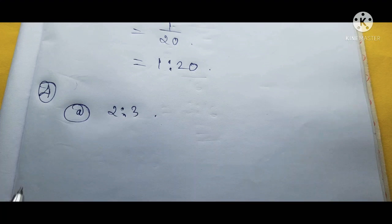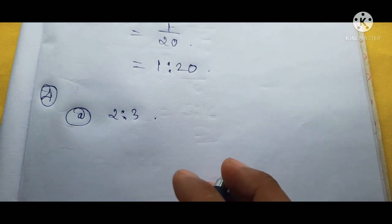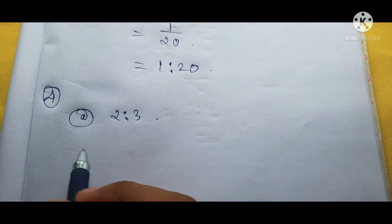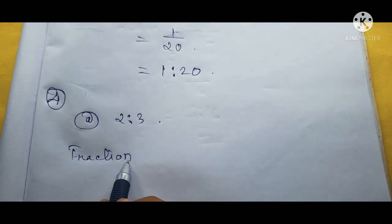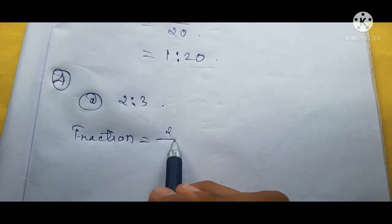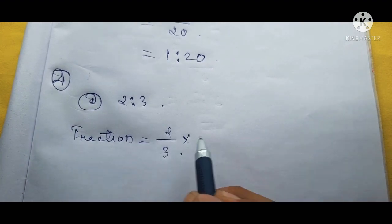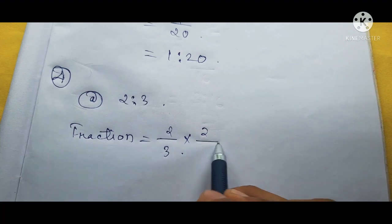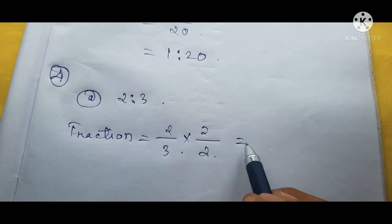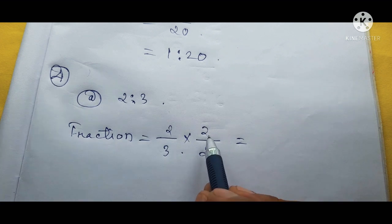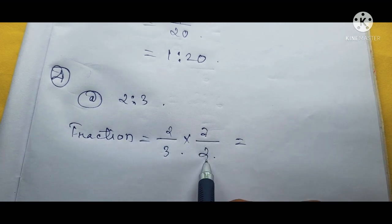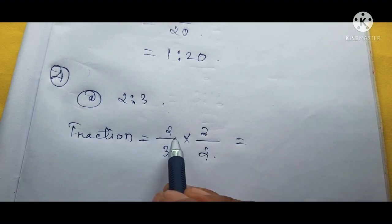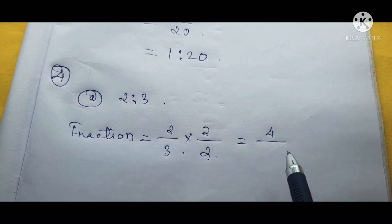Now we are going to do question 4A: find two equivalent ratios of 2 is to 3. Equivalent means the numerator and denominator relationship stays the same. We convert the ratio to a fraction: 2 by 3. To find equivalent ratios, we multiply both numerator and denominator by the same number. Taking 2: numerator becomes 2×2 = 4, denominator becomes 3×2 = 6.